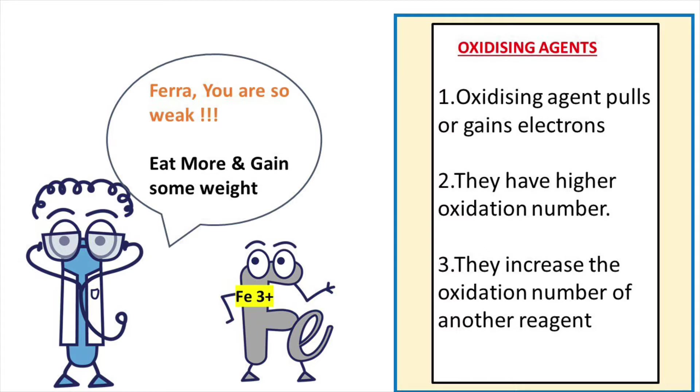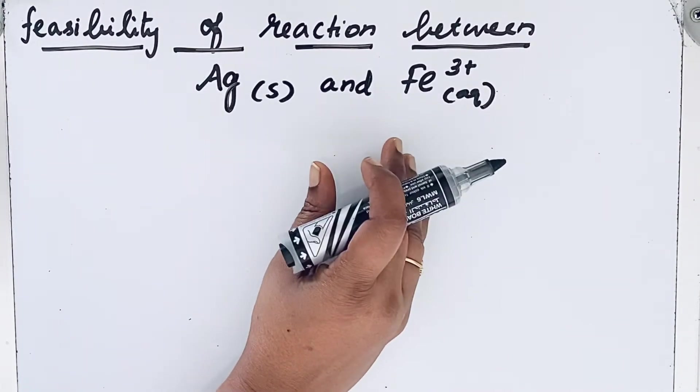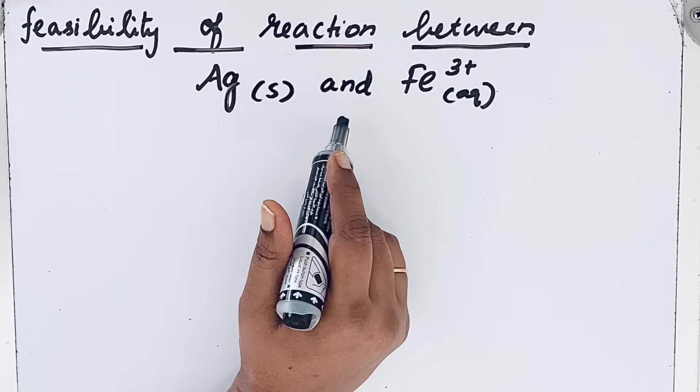So let us do the first step: identification of the oxidizing agent. Among these two, Ag and Fe³⁺, to find the oxidizing agent, first we should write the oxidation number.